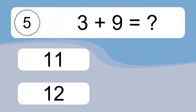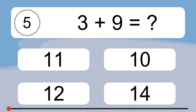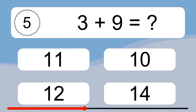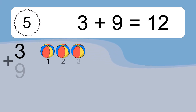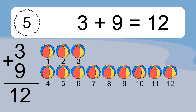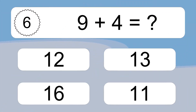3 plus 9 equals what? 1, 2, 3, 4, 5, 6, 7, 8, 9, 10, 11, 12. Let's count it. 1, 2, 3, 4, 5, 6, 7, 8, 9, 10, 11, 12.